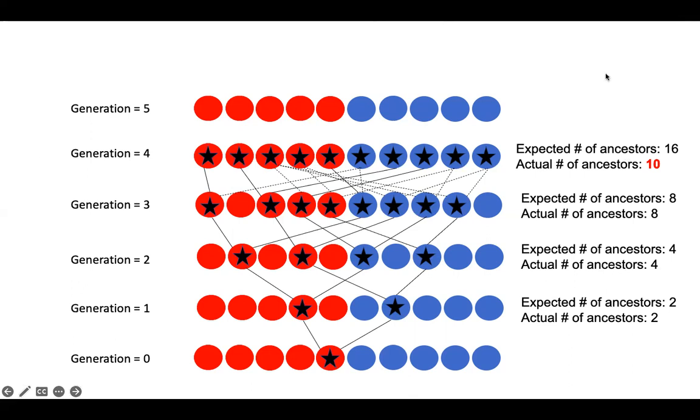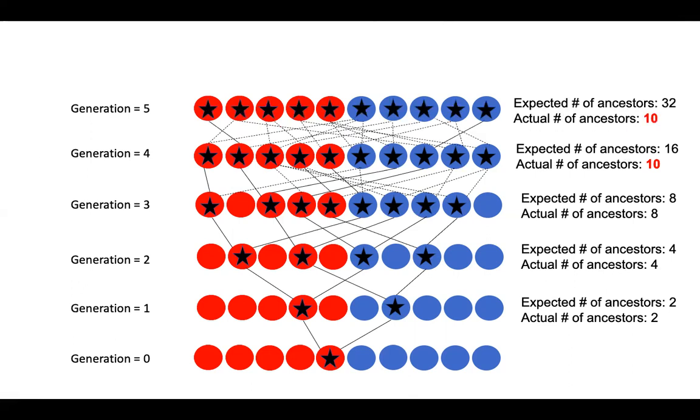The same thing, the expected number of ancestors in generation five is 32, but the actual number, since the population is constant, is 10. We're resampling the existing individuals because there's no more individuals to grab from. What that means is, if any of these individuals at generation five left any descendants at all to the modern day, then they definitionally are the ancestor of everyone alive, because they represent the entire population. You have gone back to where the whole pedigree includes every single individual living at that time.